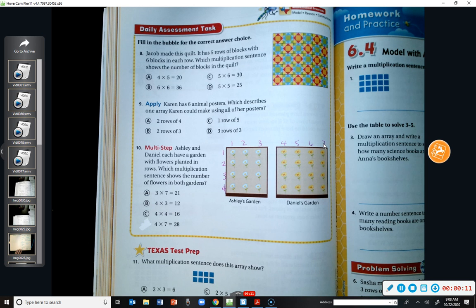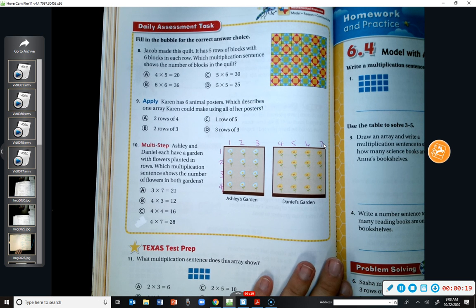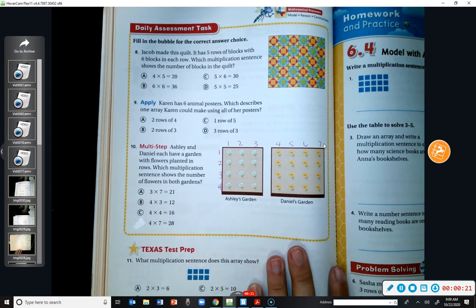Number eight said, Jacob made this quilt. It has five rows of blocks with six blocks in each row. Which multiplication sentence shows the number of blocks in the quilt?